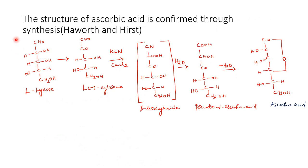The structure of ascorbic acid is confirmed through the synthesis of Haworth and Hirst. This is L-xylose. This gives L-xylosone on heating. This on further treatment with potassium cyanide along with calcium chloride gives an intermediate compound. This on hydrolysis yields pseudo-L-ascorbic acid. Then on heating, it gives a cyclicized compound known as ascorbic acid.